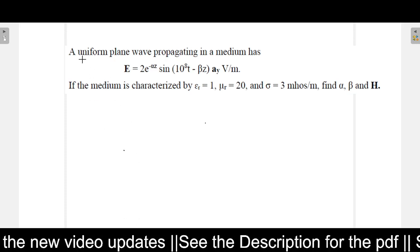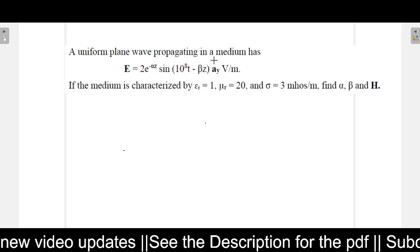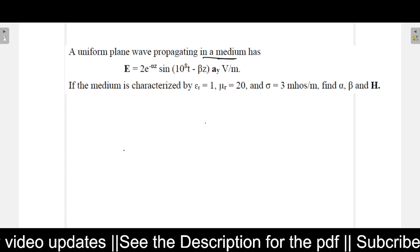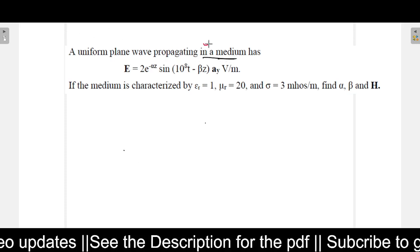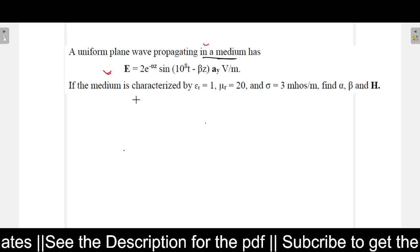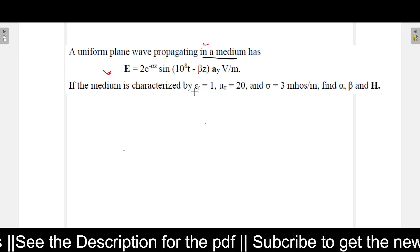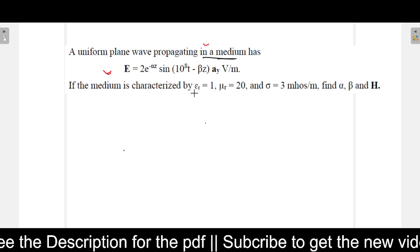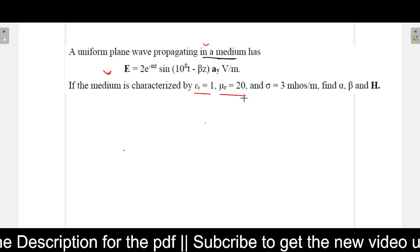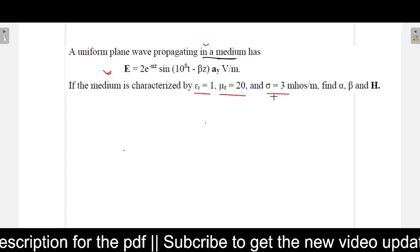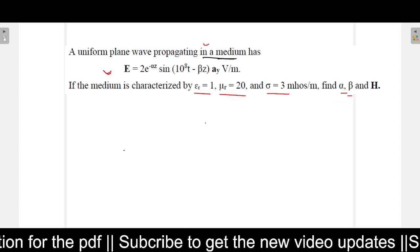In this problem, it is given a uniform plane wave is propagating in a medium. It is not given which type of medium, only written in a medium. The electric field is given, and the medium property is given as epsilon_r value, mu_r value, and sigma. The question is to find alpha, beta, and H.